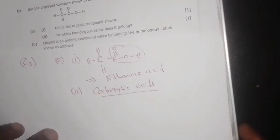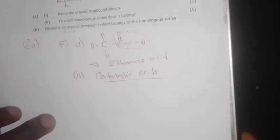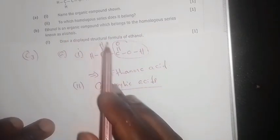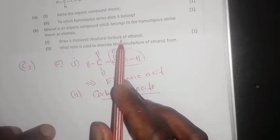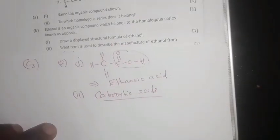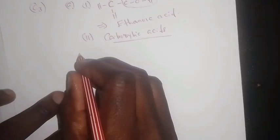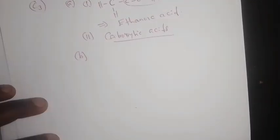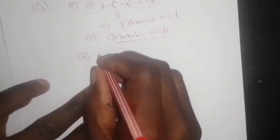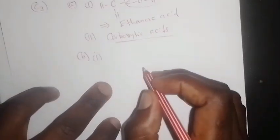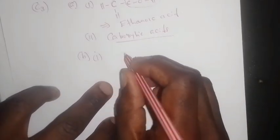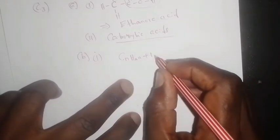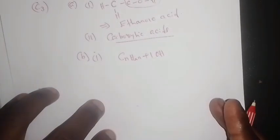Now we are on part b. Part b says: ethanol is an organic compound which belongs to the homologous series known as alcohols. So draw the displayed structural formula of ethanol. To draw the structure, first of all there is a general molecular formula that you need to know, which is CₙH₂ₙ₊₁OH.